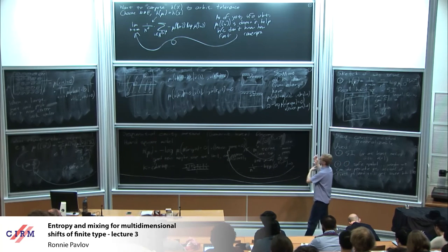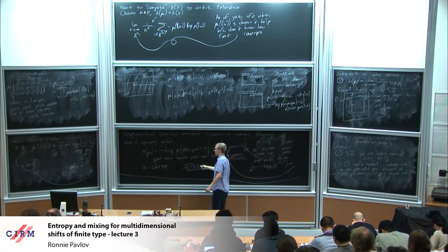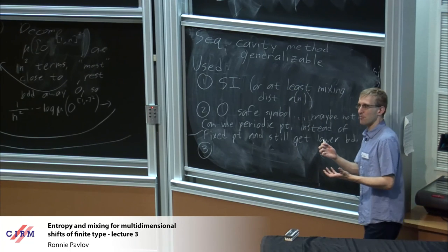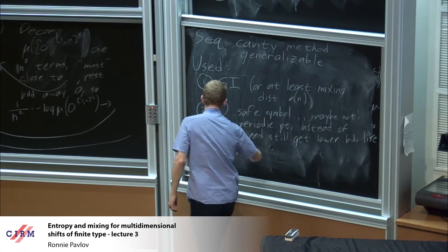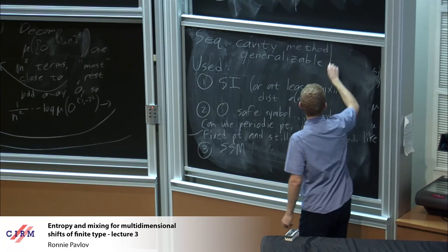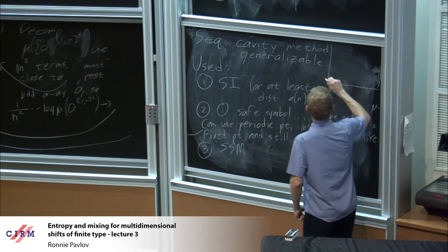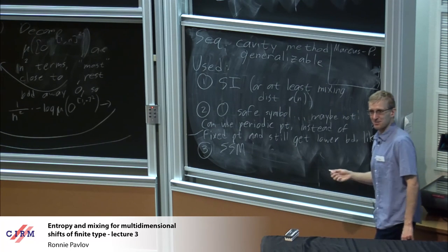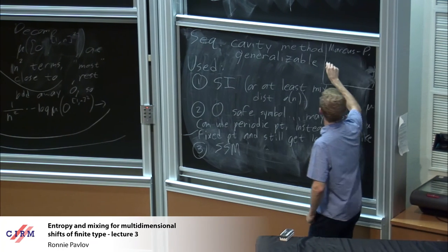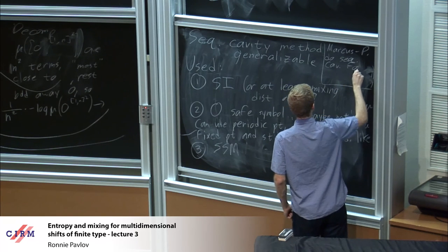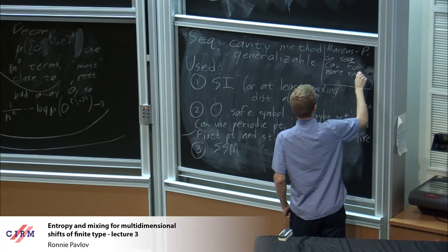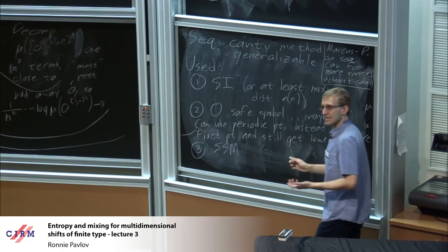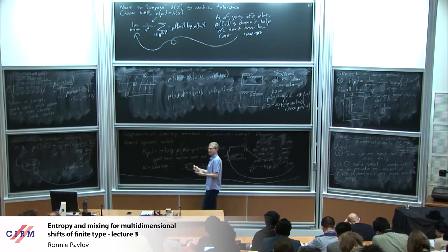Does that cover everything that we needed? We needed SI (or mixing distance little o of n) to know that we got the first formula. We need a periodic point so we can compute these conditional probabilities. But there's one thing I still haven't alluded to: what's the very last thing I needed to say that the probabilities are actually converging to some sort of a limit? That was SSM. So SSM implies that for all k far from the boundary, these terms are close to the target. This generalization is work of Brian Marcus and myself.